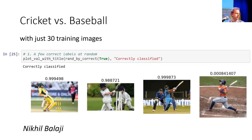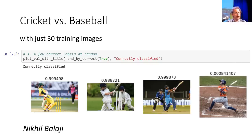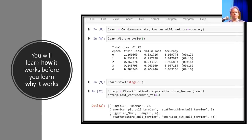By the end of lesson one, you'll be able to build something like the example from Nicol, who downloaded 30 images of people playing cricket and baseball and built a nearly perfect classifier using the code you'll see today. We're going to start by looking at code, which is very different from many academic courses. Instead of starting with lots of theory and working toward a postgraduate degree before building something useful, we're going to learn to build the useful thing today.